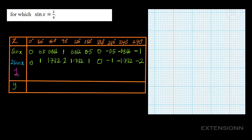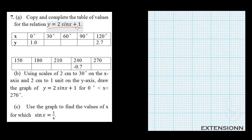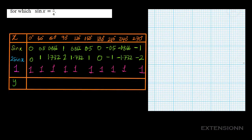Now we write the 1s out in the next row since y equals 2 sin x plus 1 — the plus 1 is a constant. So every column gets a 1 added. Then we add the values of 2 sin x and 1 together to get y.